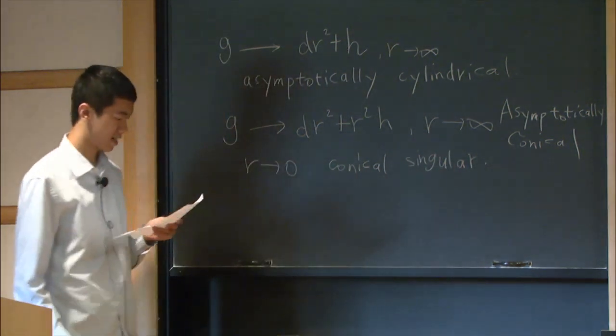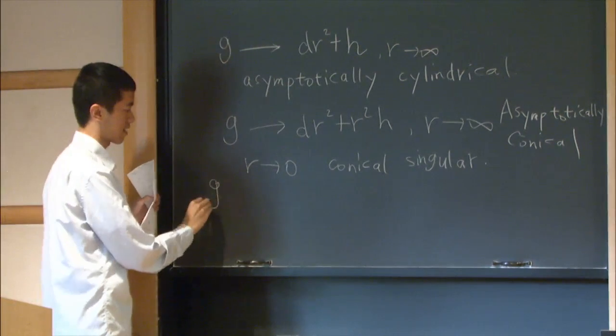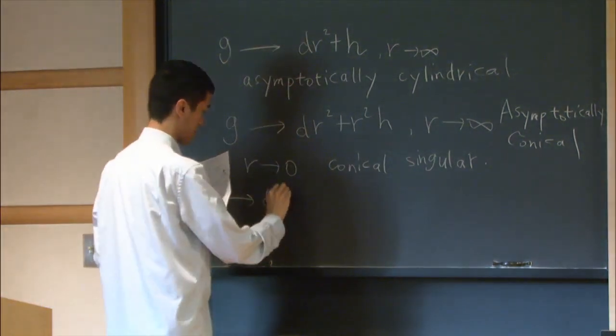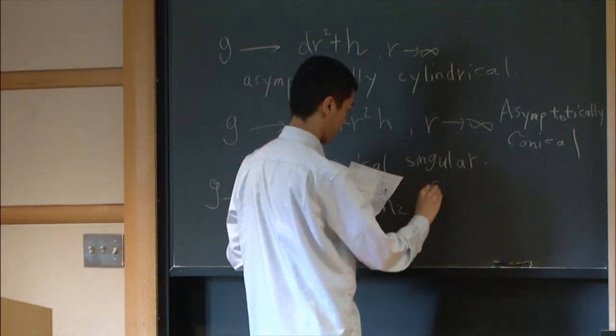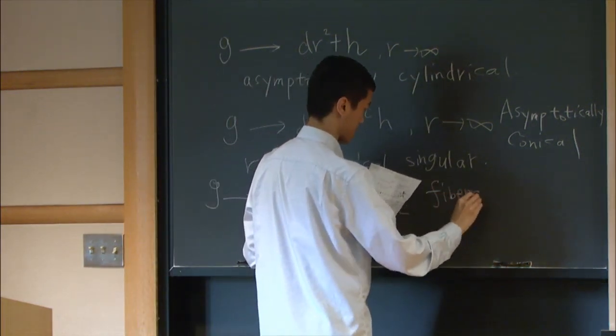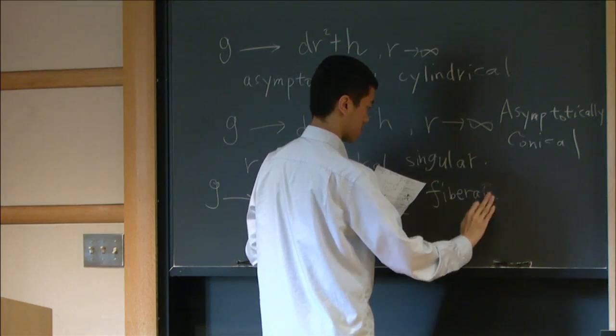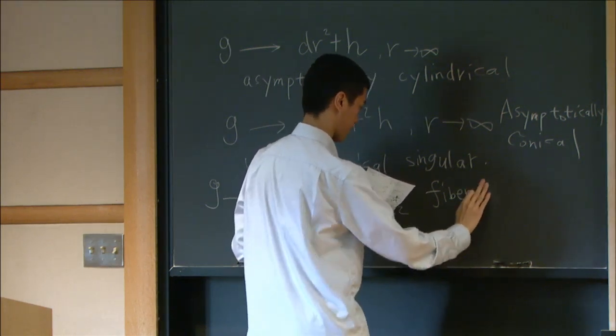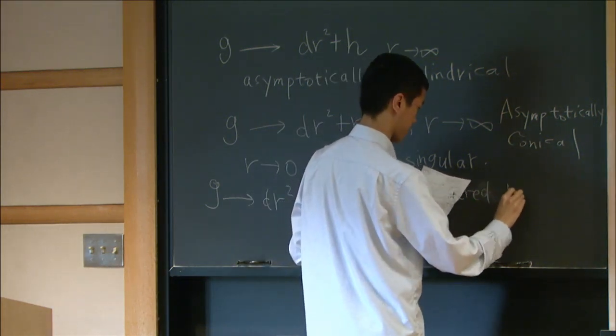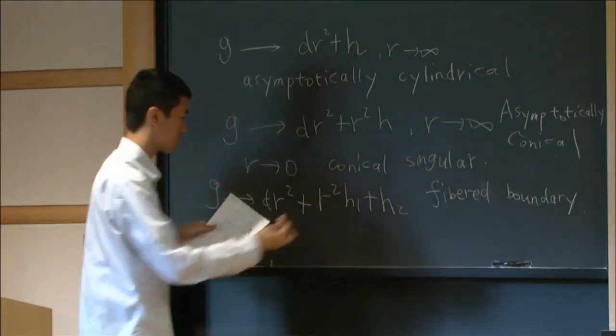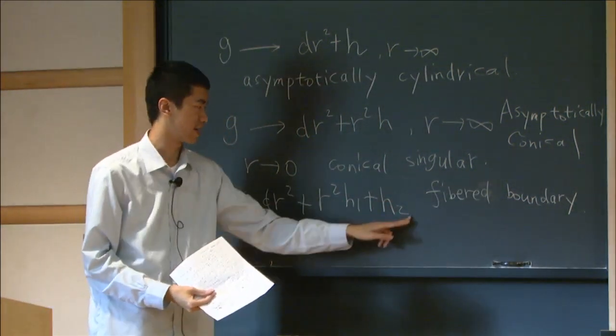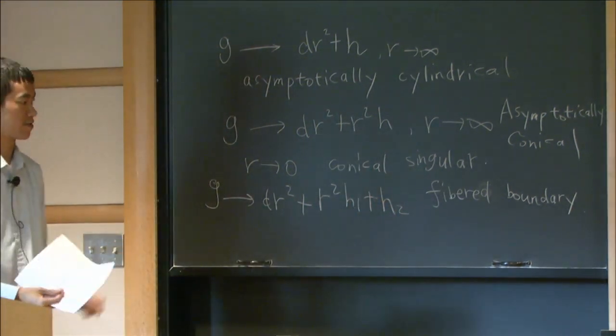There is a more complicated thing, which is, you can let G converge to dr squared plus r squared h1 plus h2. That's called fibrous boundary, because usually we can not only take the product metric, but we can replace this h2 by a fibration.